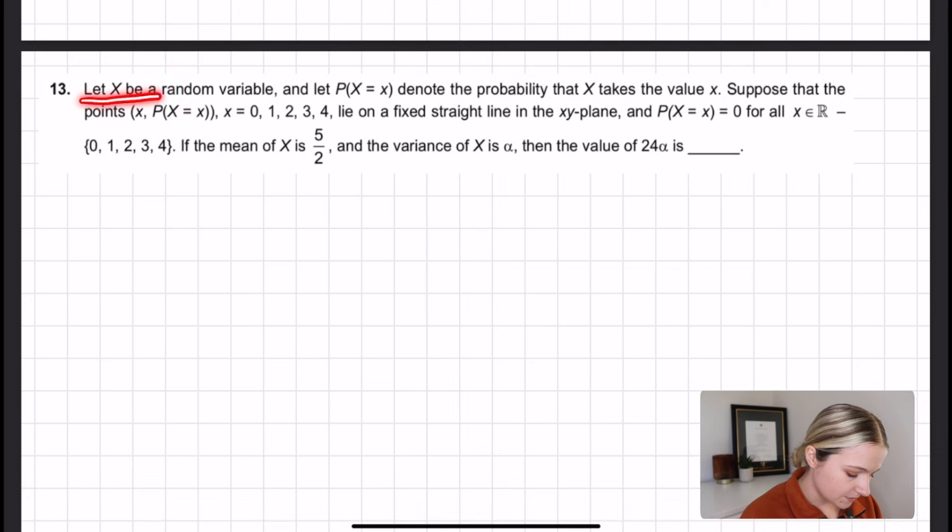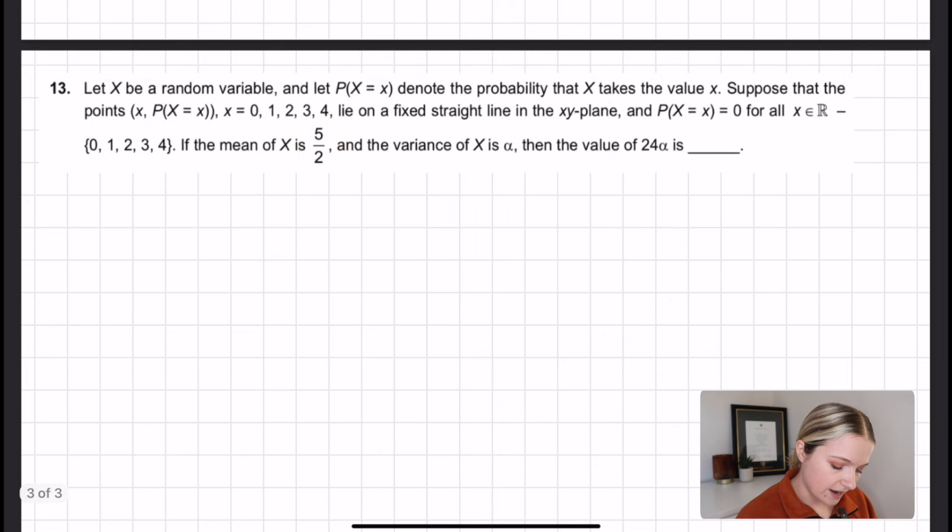This is the question: Let X be a random variable and let P(X=x) denote the probability that X takes the value x. Suppose that the points (x, P(X=x)) for x equals 0, 1, 2, 3, and 4 all lie on a fixed straight line in the xy plane. We're also told that P(X=x) equals 0 for all x in reals without 0, 1, 2, 3, 4. If the mean of X is 5/2 and the variance of X is alpha, then the value of 24 alpha is what we have to find out.